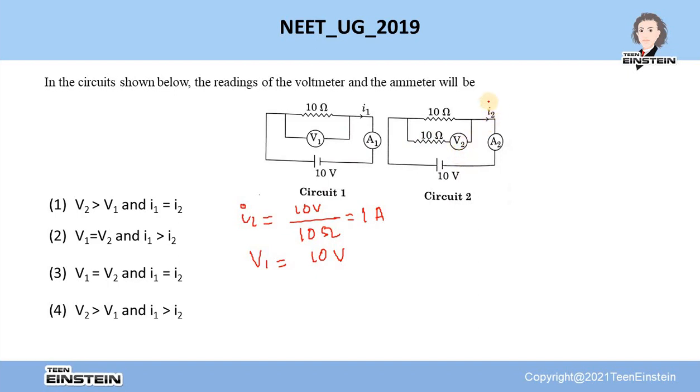Then you have to find out what is the current I2, what is the voltage across this 10 ohm resistance or what is the voltage reading we see in this voltmeter V2. Look here,